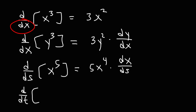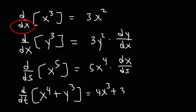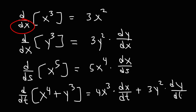So let's say we want to differentiate x to the fourth power plus y cubed with respect to time. It's going to be 4x cubed times dx/dt, plus 3y squared times dy/dt. dx/dt is the derivative of x with respect to time, and dy/dt is the derivative of y with respect to time. You'll see that a lot when dealing with related rates.